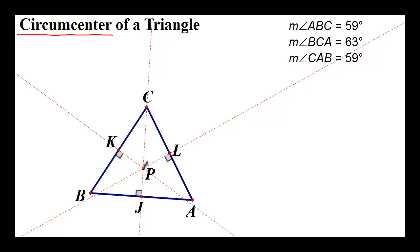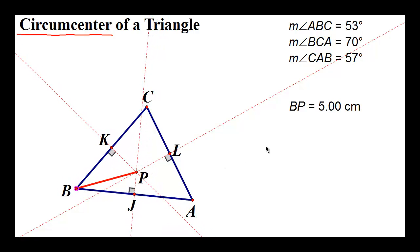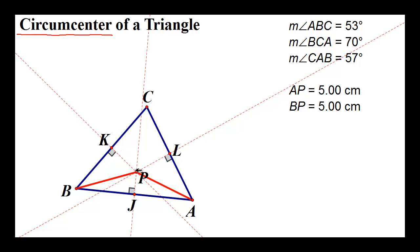If we measure from point P to point B, we get 5.00 centimeters. Moving point B around, that distance stays the same. Measuring from point P to point A also gives 5.00 centimeters. And since segment CB was also bisected by a perpendicular bisector with point P on it, measuring from P to C also gives 5.00 centimeters — exactly the same distance.